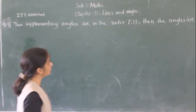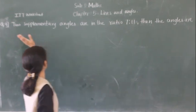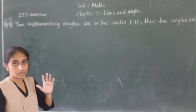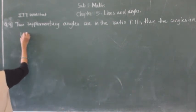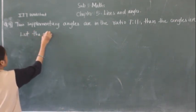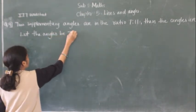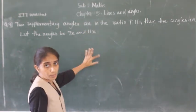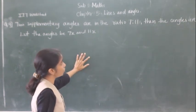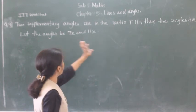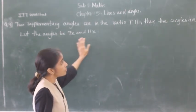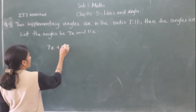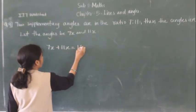Let's move towards question number 5. Two supplementary angles are in the ratio 7 to 11. Then the angles are — let the angles be 7x and 11x. Since they are supplementary angles, the measurement is 180 degrees. So 7x plus 11x is equal to 180 degrees.